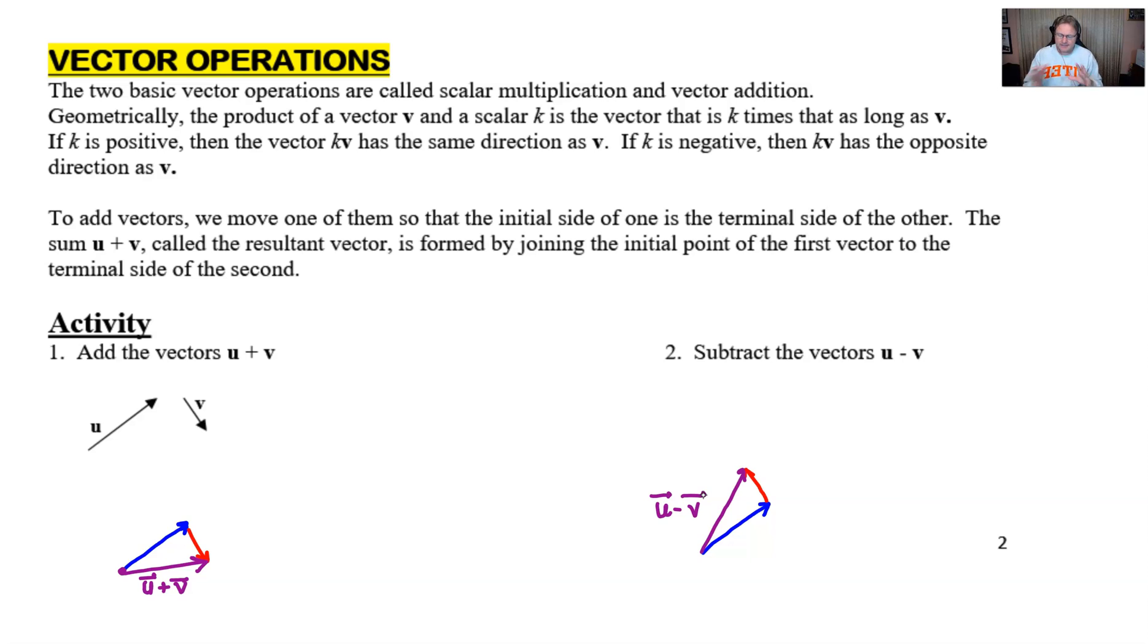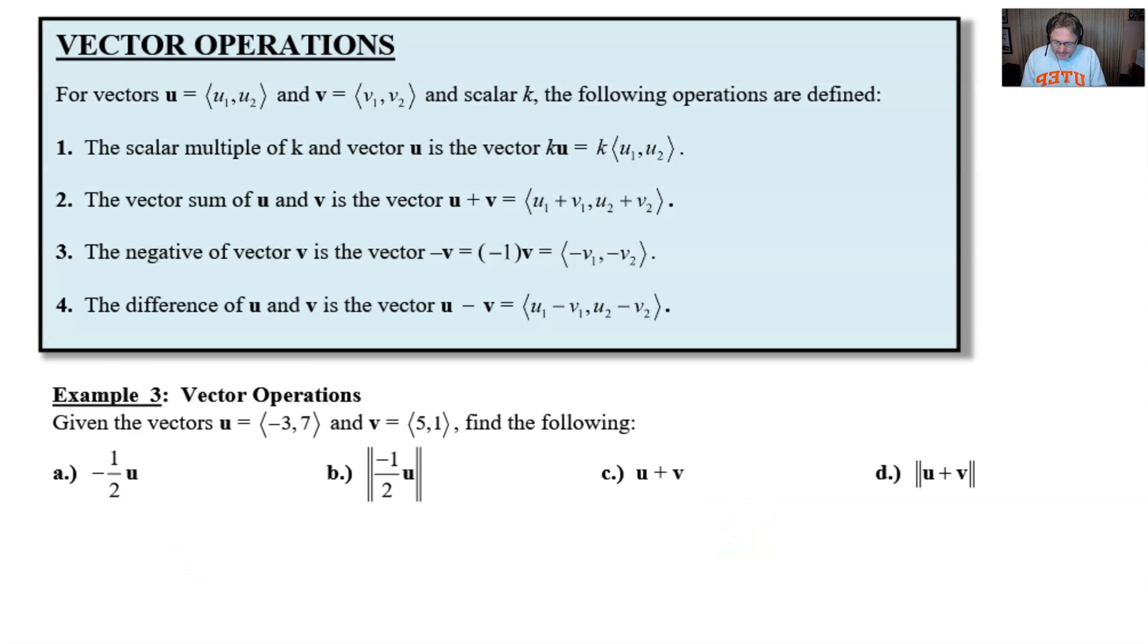All right, now let's go ahead and take a look at our example three that shows us all the various properties that we're going to perform on vectors algebraically. But we'll look at those properties first, and as you can see in the box there are going to be four of them. So we're going to let vector u be the component vector with the components u1, u2. Vector v will have components v1 and v2, and there's a scalar value k. The following operations are defined.